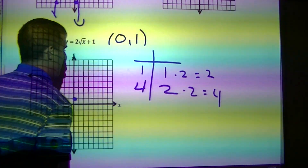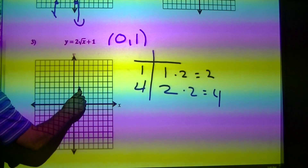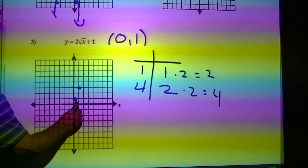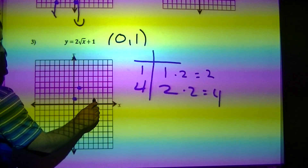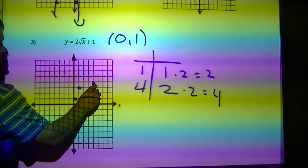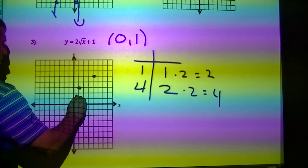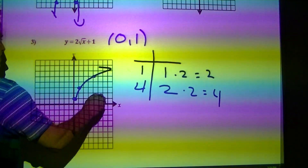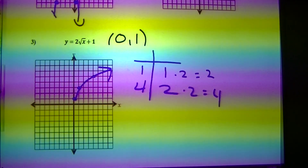Since I have this 2 here, I'm going to multiply those by 2. So from my anchor point I'm going 1 right, 2 up. Then 4 right, 4 up. And that's what my graph looks like.